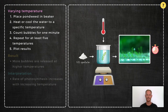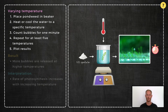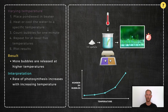Experiment 7: Investigate the effects of varying temperature on the rate of photosynthesis. Repeat the process from the previous experiment, but instead of varying light intensity, change the temperature each time using an ice jacket and a hot plate. We find that more oxygen bubbles are released per minute at higher temperatures, as photosynthetic enzyme activity increases with temperature.